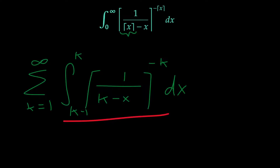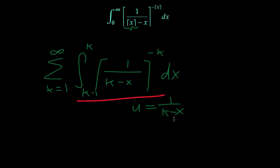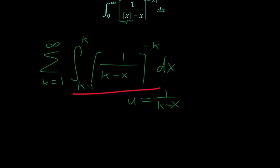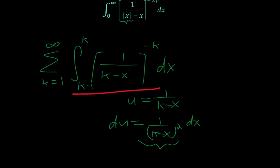To actually evaluate this integral, it's not awful. What we can do is a u-substitution: let u equal 1 over k minus x. This simplifies things quite a bit. We get du equals 1 over (k minus x) squared dx, and that squared term is just u squared, so our dx is equal to 1 over u squared du.